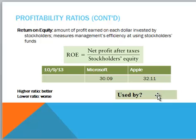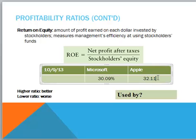Return on equity is the amount of profit earned on each dollar invested by the shareholders, expressed as a percentage. Microsoft, for every $100 invested, is earning $30 net profit. Apple is earning $32, so Apple has a higher return on equity than Microsoft. Boeing, because of its leverage, has a 63% return on equity. Even though Boeing's profit margin was lower and return on assets was lower, because of that leverage they have driven up their return on equity. This ratio is used by management, investors, banks, and analysts — and for an investor, return on equity is a very important ratio.